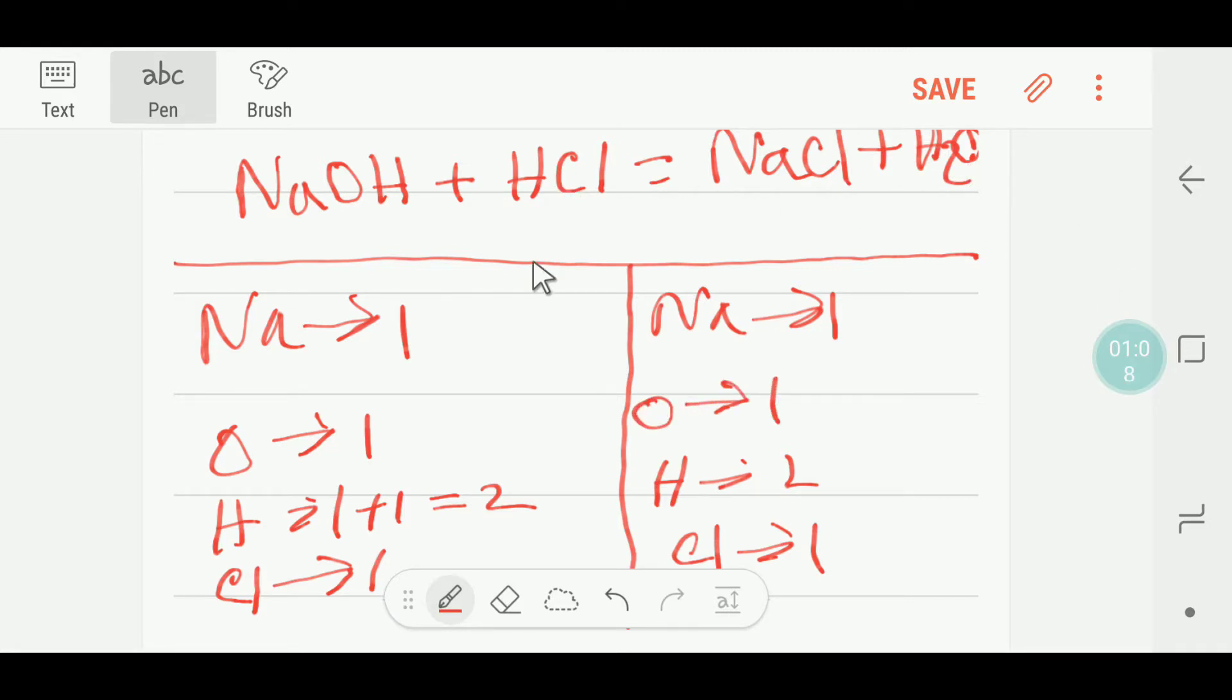So now I'll look at the number of atoms here: sodium one-one, so sodium is balanced; oxygen one-one, so oxygen is balanced; hydrogen two-two, so hydrogen is balanced; chlorine one-one, so chlorine is balanced. So this is a balanced reaction.